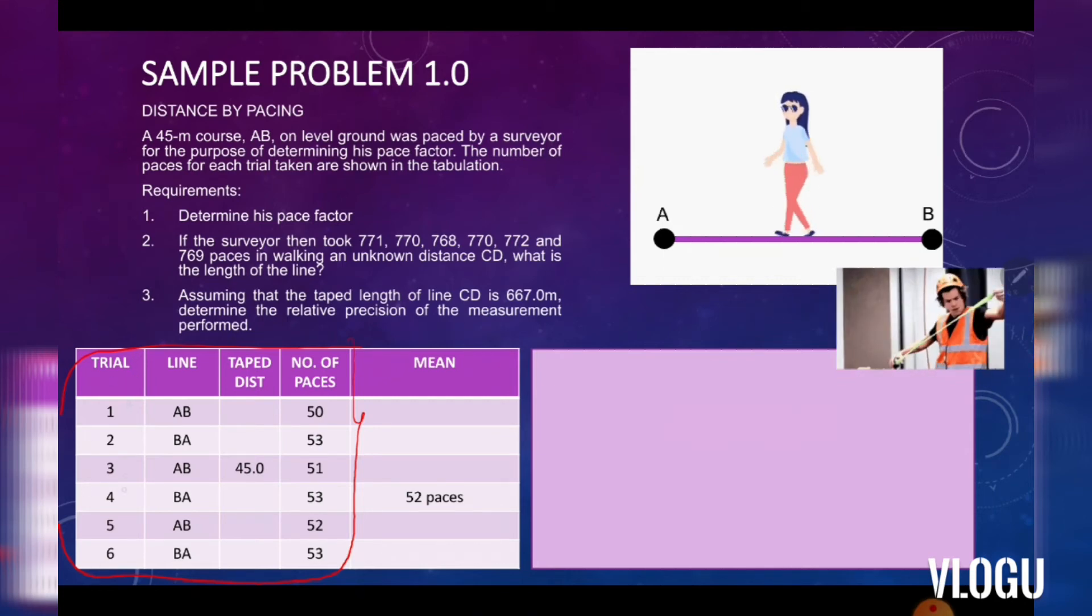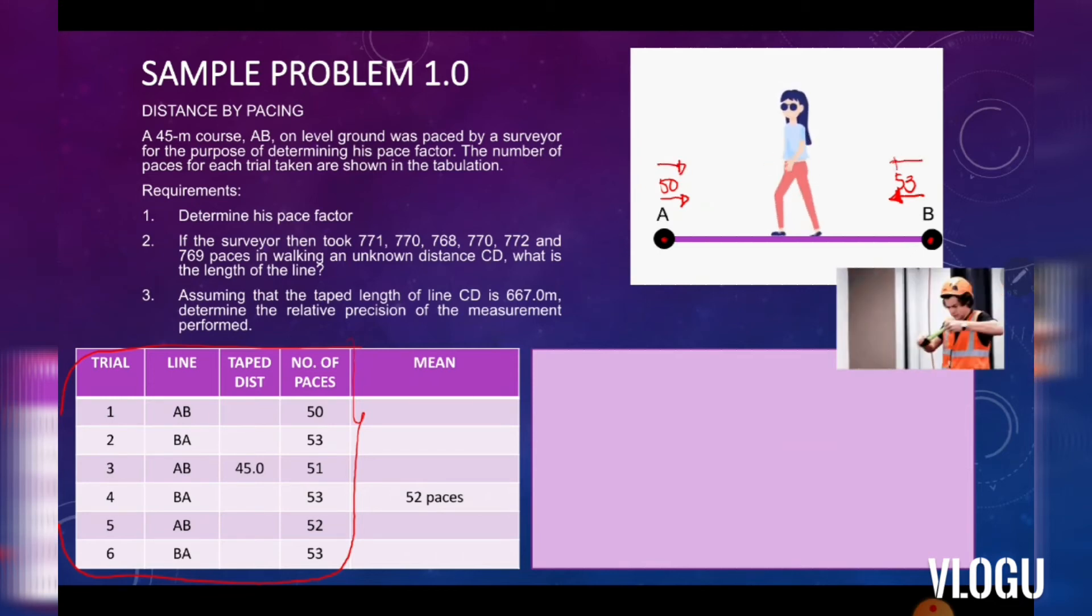There are six trials. From point A up to point B, there is a number of paces of 50. From point B to point A, he returned with 50. Then 51, and so on, up to six trials to determine the pace factor.